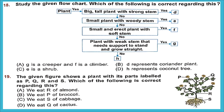Let's check the options. Option A says G is a creeper and F is a climber — but G is a plant with a weak stem that needs support to stand and grow straight, which is a climber, not a creeper. Option B says D represents coriander — but D is a big tall plant with strong stem, which is a tree. Option C says E is a shrub — E is a small plant with a woody stem, which is indeed a characteristic of a shrub. So option C is correct.